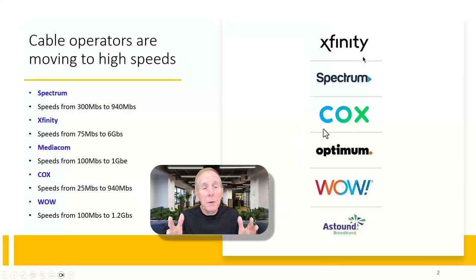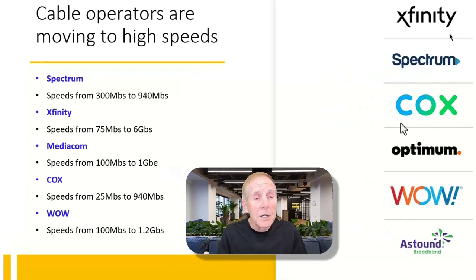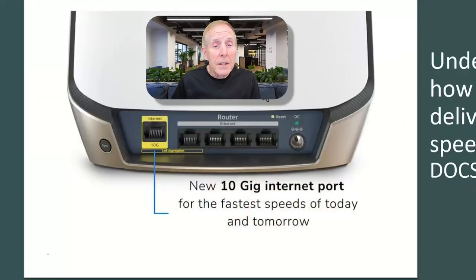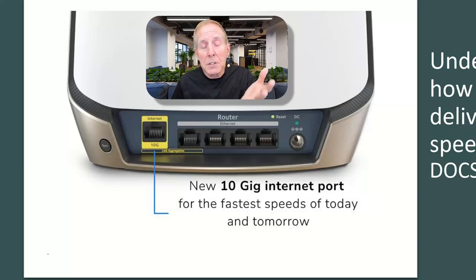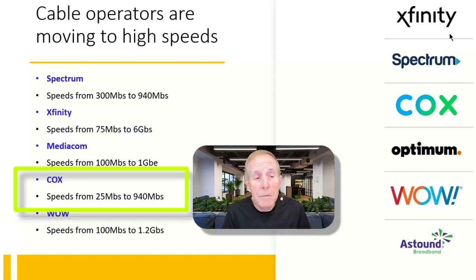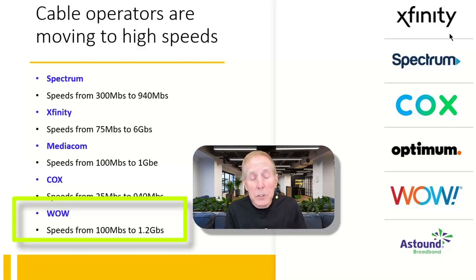Here are some of the latest speeds from the various cable companies. Spectrum now delivers up to a gig to your home. Infinity now delivers up to six gigabytes. MediaCon delivers up to a gig in some areas, and we know that it depends on where you are in the cable system. Cox delivers up to 940 megabits, and WOW can deliver up to 1.2 gigabits.